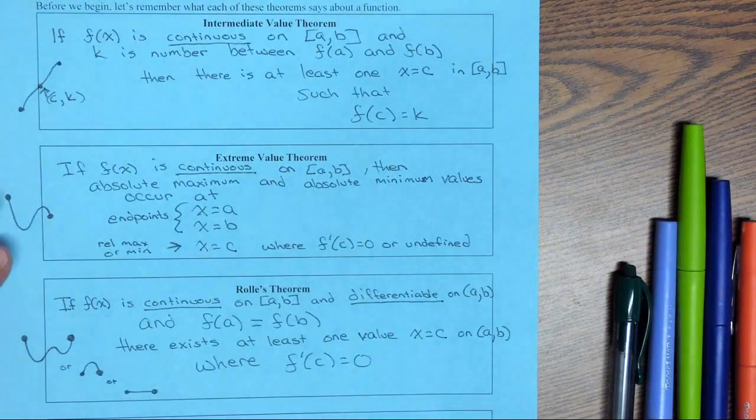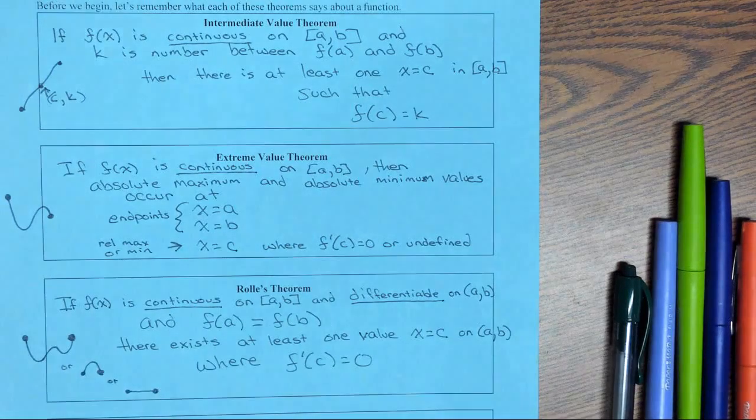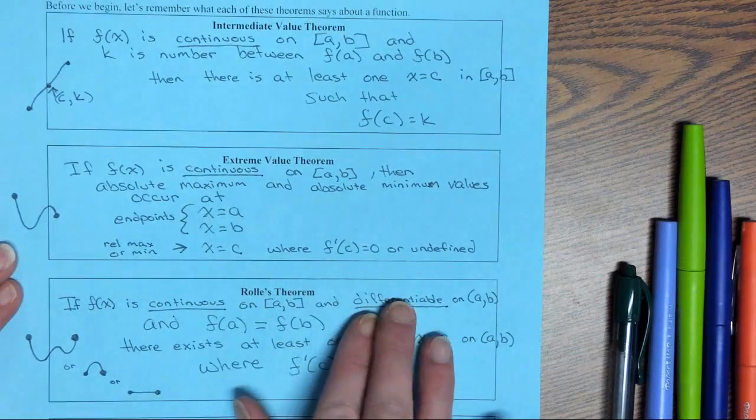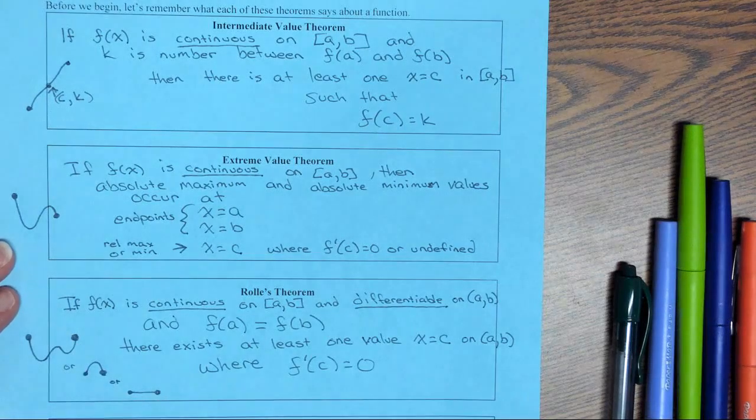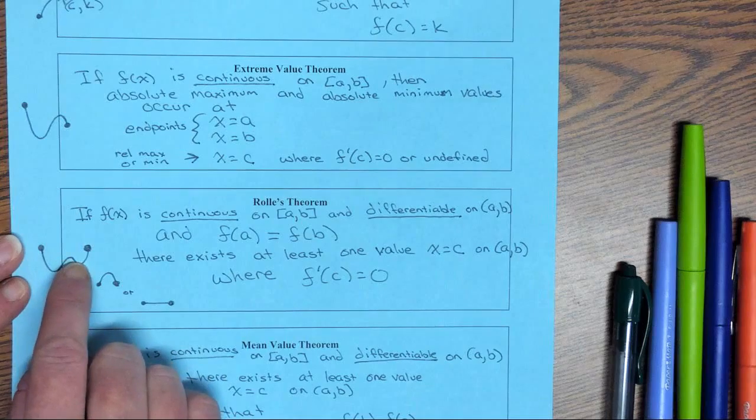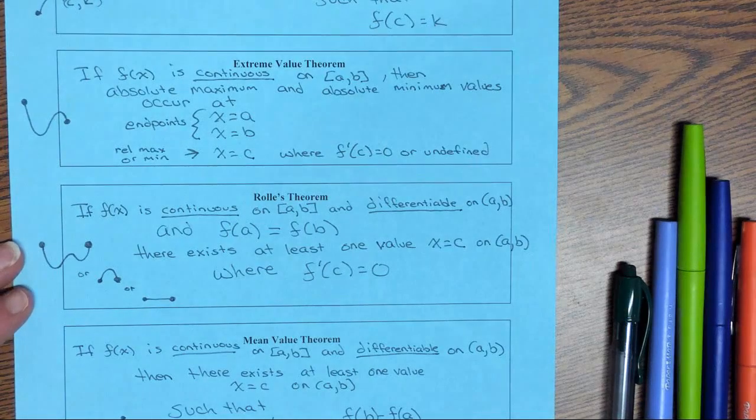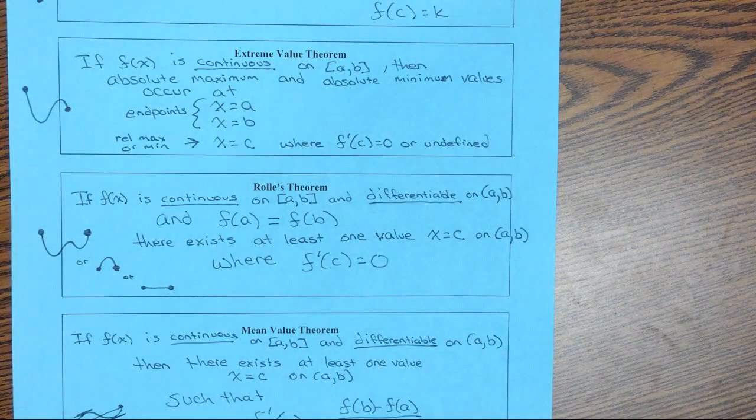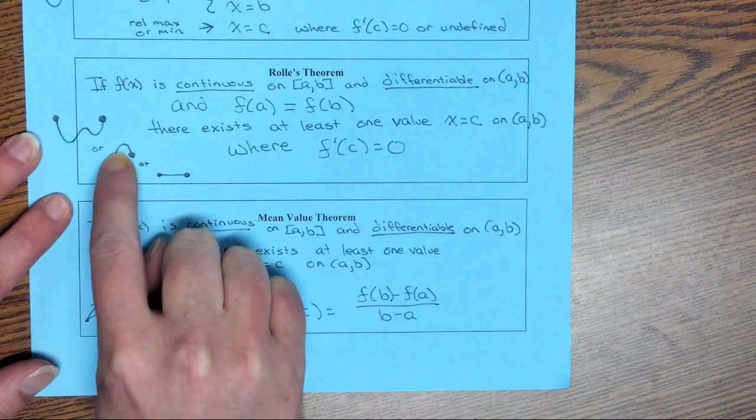Rolle's Theorem. Now, Rolle's Theorem and Mean Value Theorem, you don't just have to be continuous. In addition, you have to be differentiable, no sharp turns. So for Rolle's Theorem, we're continuous and differentiable, and our two endpoints have the same y value. But I dare you to take any of those and find a way to take the derivative and it not be zero.